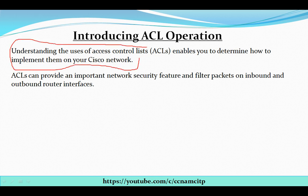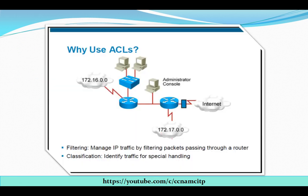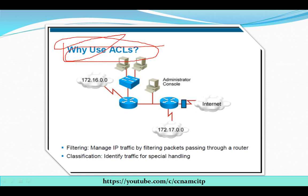ACLs can provide an important network security feature and filter packets on inbound and outbound interfaces. The main functions of access list are: first, filtering, and second, classification. I will explain what filtering and classification mean in this same video. So why use ACLs — why is it required?